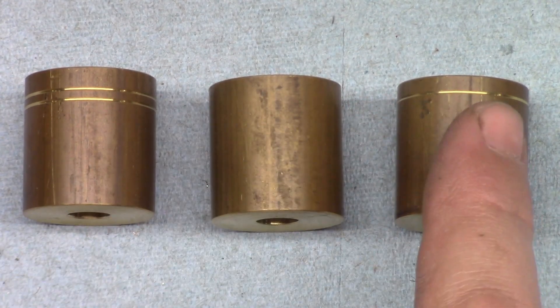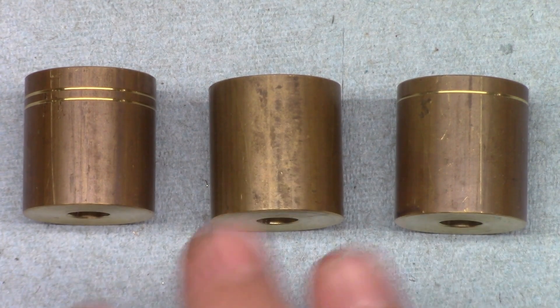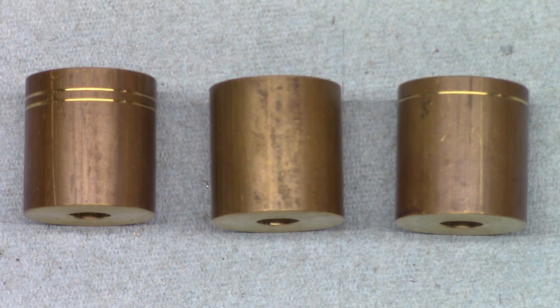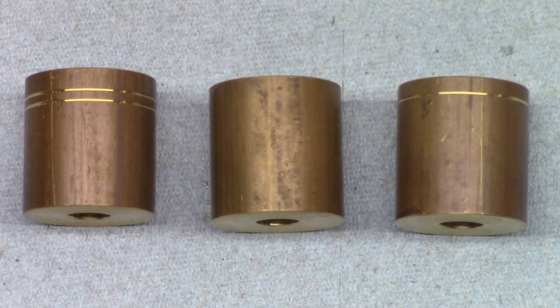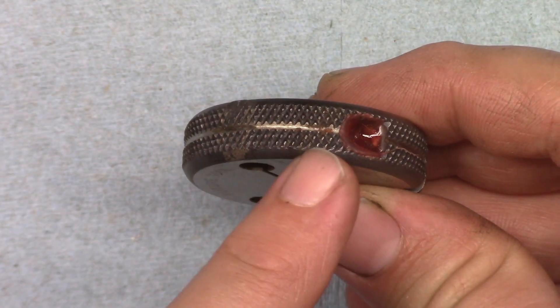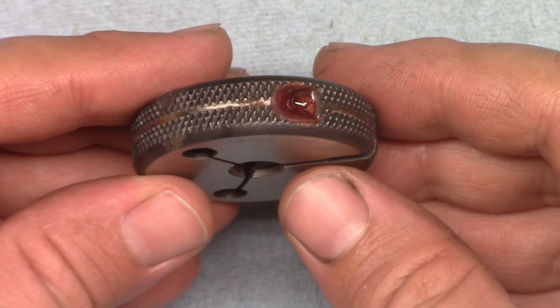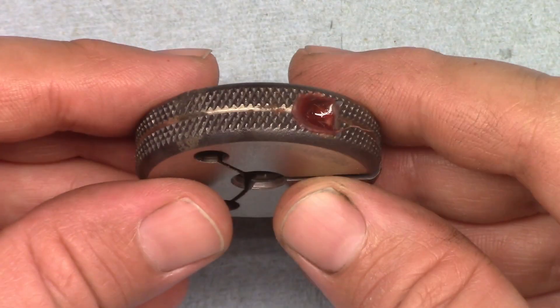And again, I only added grooves to these so I could tell my samples apart. They're all right-handed threads and serve no purpose other than being samples for this video. Likewise, the groove I showed earlier on the no-go ring gauge is also just for easy identification. It's still a right-handed thread.